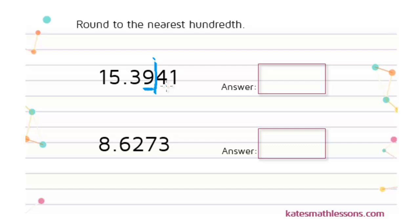So we need to look at this four here, and when you're telling whether to round or not, if the number is five or greater, that means you need to round up. If it's four or less, that means you need to keep it the same.